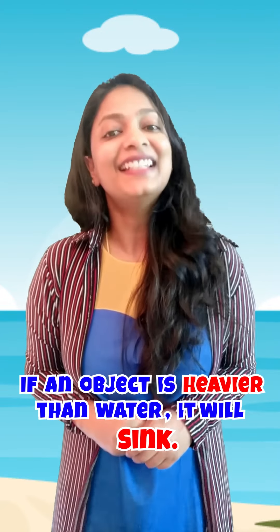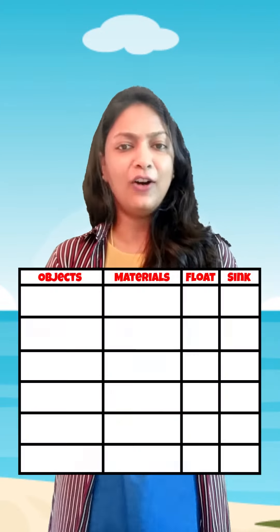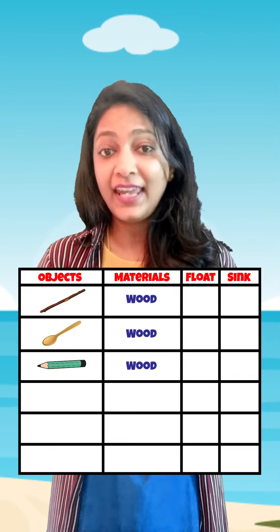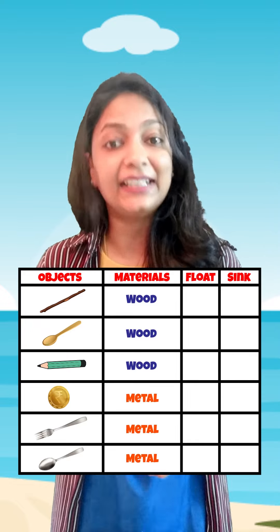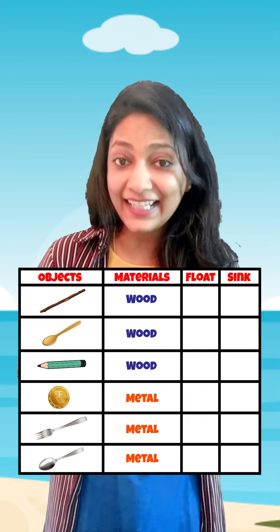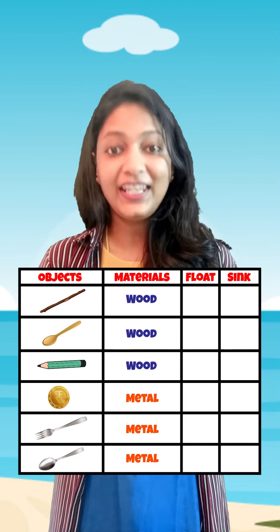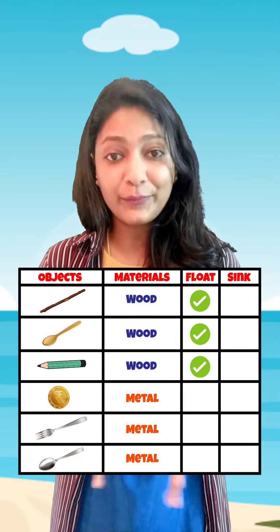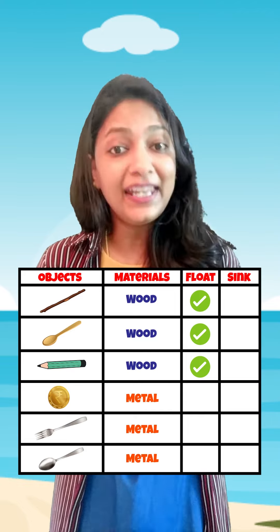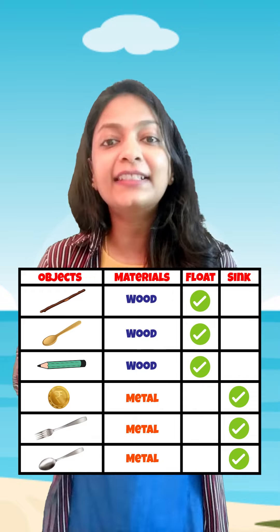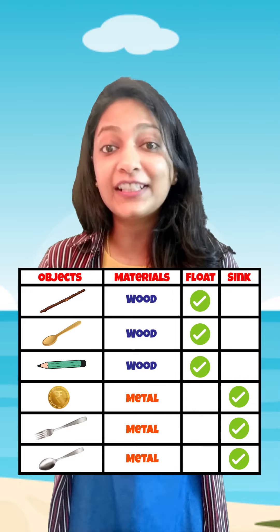Why don't you take three objects made of wood and three objects made of metal and find out if they sink or they float? Usually objects made of wood float and objects made of metal sink. Why don't you try it yourself and find out if it is true or not?